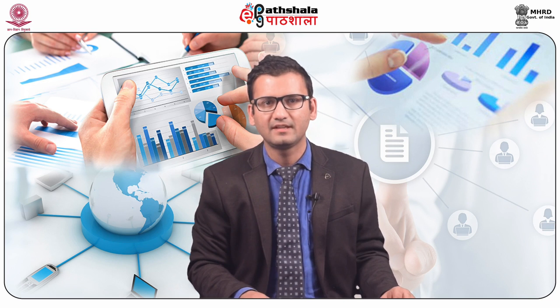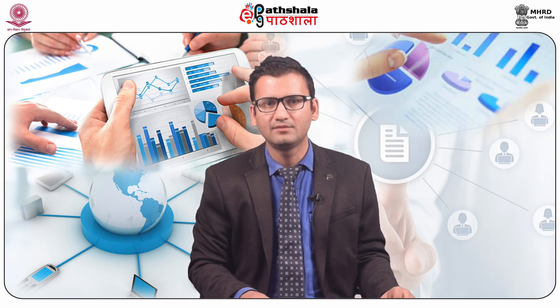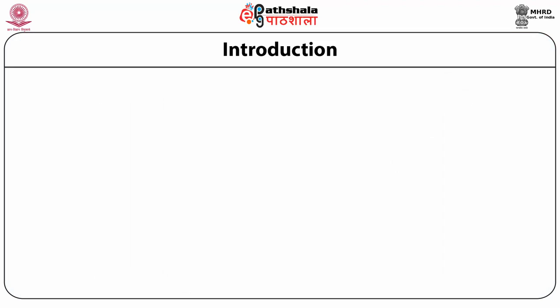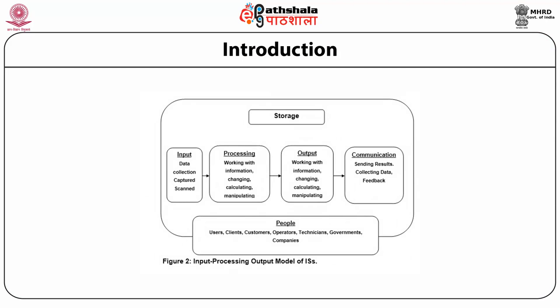A desired feature of a communication system is that the communicating parties themselves can also be certain of the results of the communication. Figure 2 illustrates the input-process-output model of a computer system, where inputs are processed to generate output, communicated to stakeholders using storage devices. Storage devices can also serve the purpose of storing input, output, or communicated information.